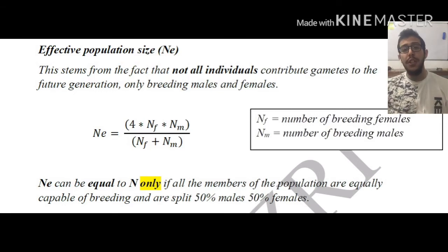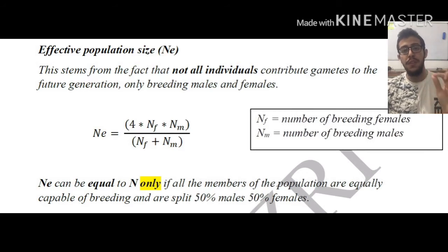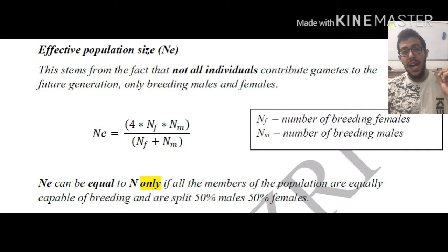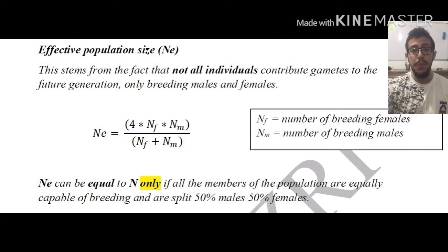Now, there is only one case where the effective population size is equal to the number of individuals in a population — that is when the entire population are all equally capable of breeding, and they are divided 50% males and 50% females.